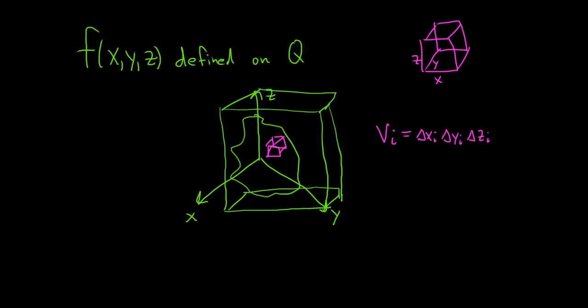Now consider all of the boxes that are contained entirely in Q. Let me highlight Q. Q is this blob here. It's this 3D blob. So you have infinitely many boxes in Q.